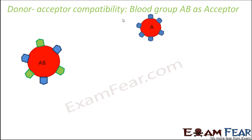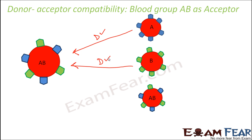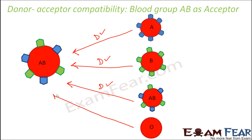Now if A tries to donate to AB, since there are no antibodies at all, there is nobody to attack the antigens A, so A can donate. Similarly, if B wants to donate, again there are no antibodies to attack the antigens B, so B can also donate. Even AB can donate, because now there is nobody to attack or destroy these red blood cells. So everybody can donate because there are no antibodies to attack any of them.